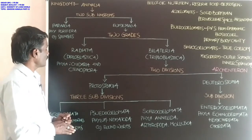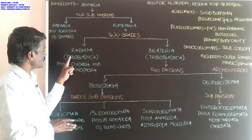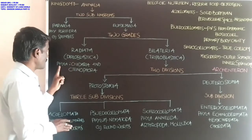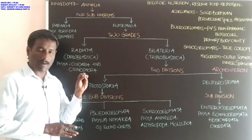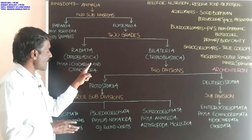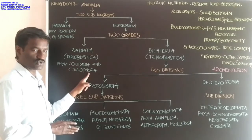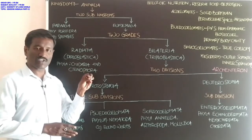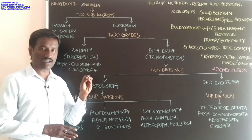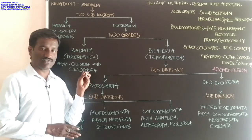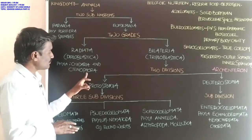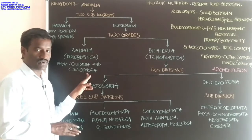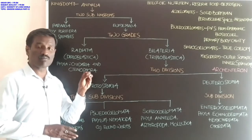Which phyla are present in grade Radiata? Two phyla: Cnidaria and Ctenophora. Cnidaria includes hydra, freshwater polyp, Aurelia, and jellyfish. Ctenophora — these are marine animals and include comb jellies.